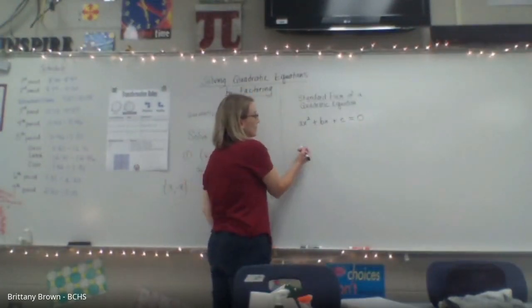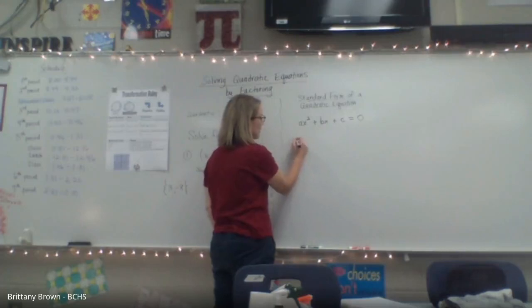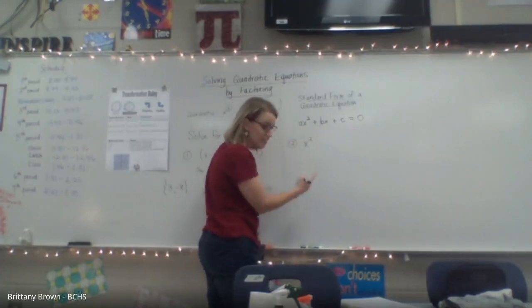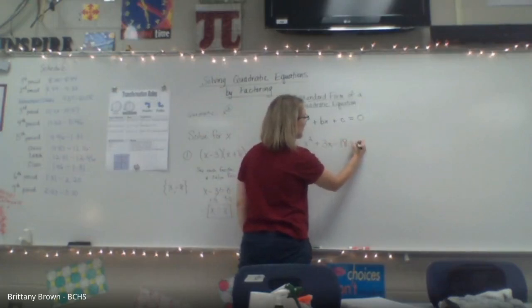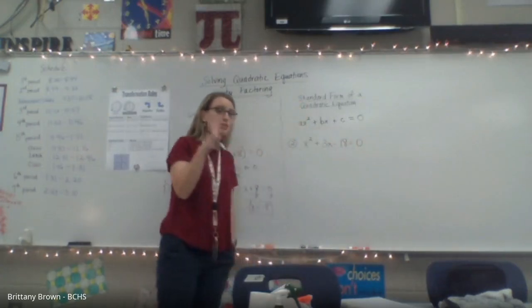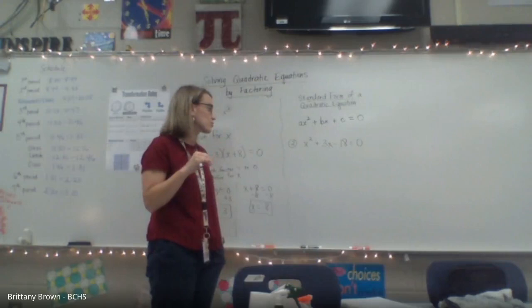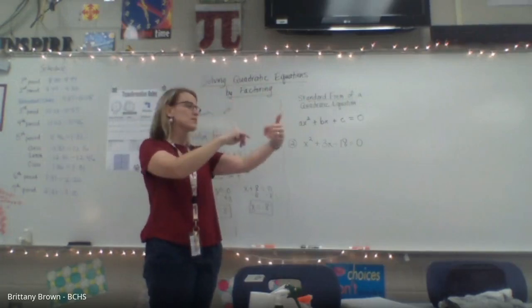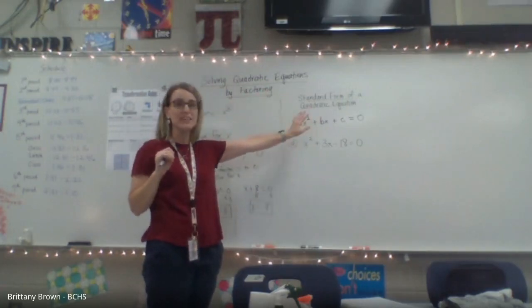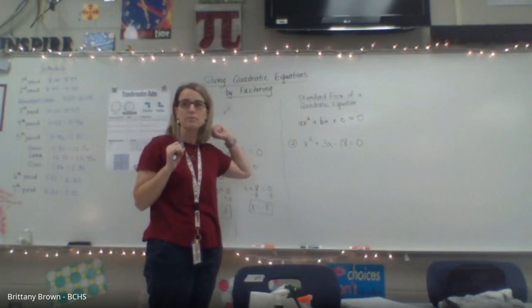So when you get ready to do an equation like this one, and it's not factored, you want to make sure that your equation is in standard form first. And by that I mean, is everything in order, like x squared, x constant, and is it equal to zero? And if it is, it's time to factor it.